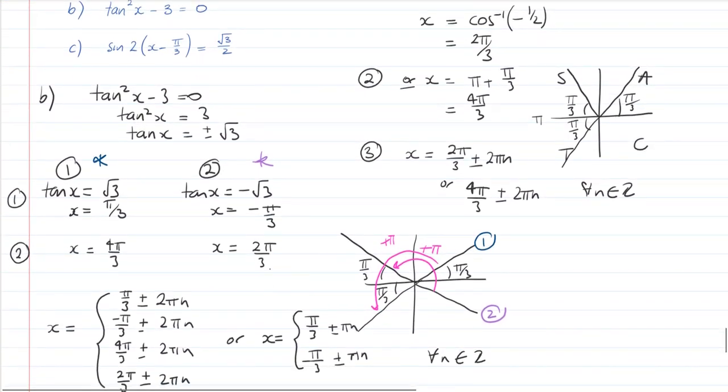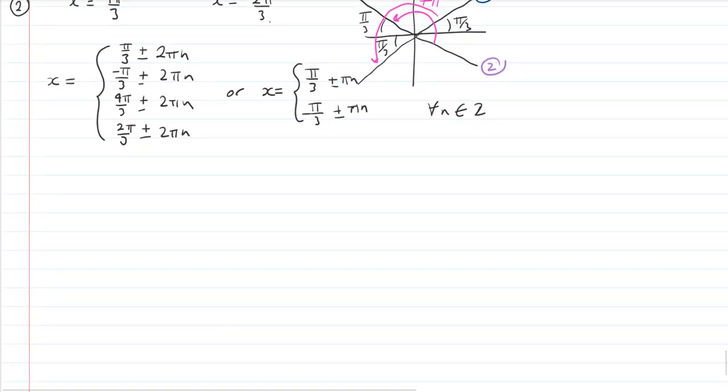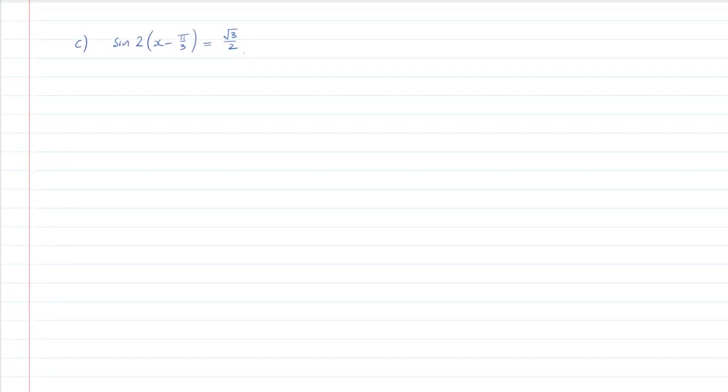That's part b. Part c is this crazy looking sine guy here. So for part c, again, same process. I'm rearranging. I need to be careful, this is a method skill. I do 2(x - π/3) equals sine inverse of √3/2. Now this is positive, so it's in the first quadrant. The calculator, where exact values are going to spit out π/3 again, because why not? We've got more π/3 to deal with. This is our first solution. So we've done step one.